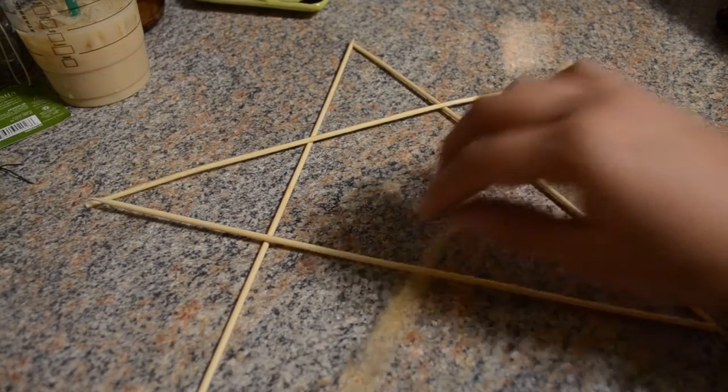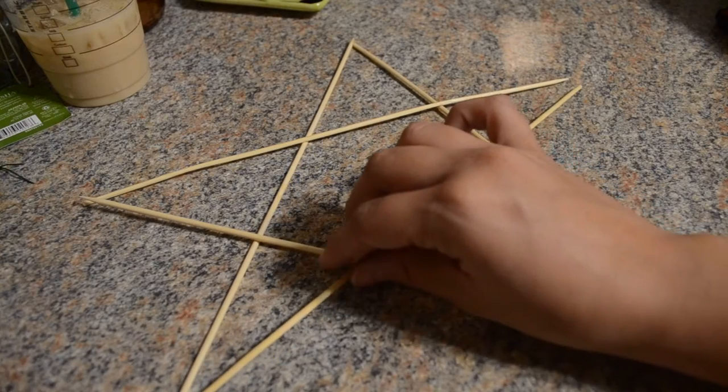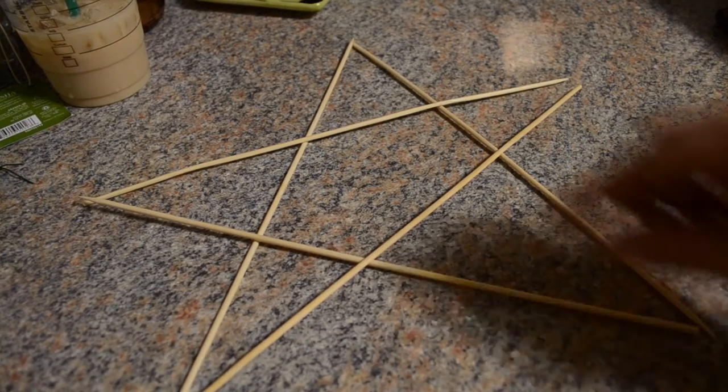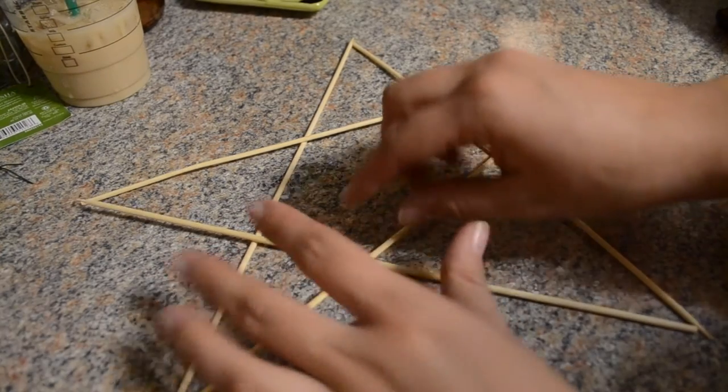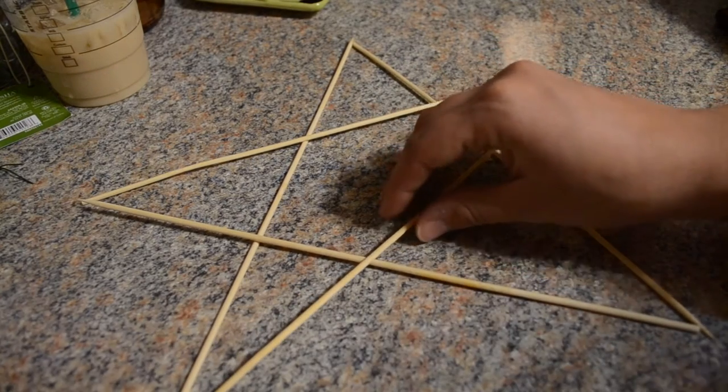Another key point to have is that anywhere that two sticks touch you want to glue there. Otherwise it will be really shaky and loose, so as you can see where those two are I would just put hot glue there and hold it down so that they stay together.